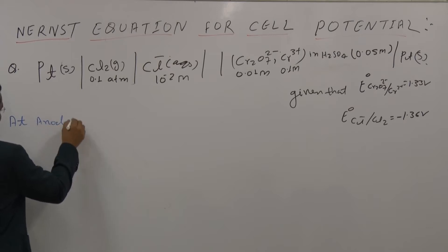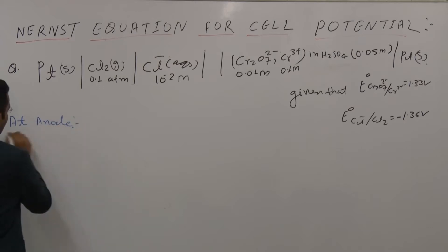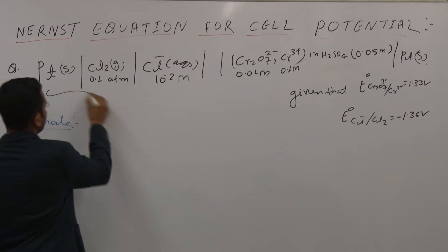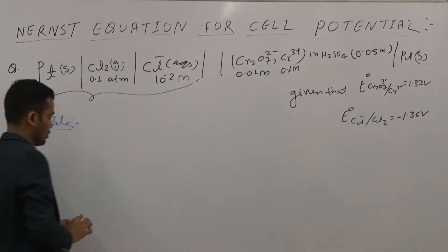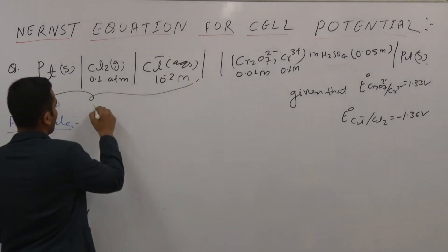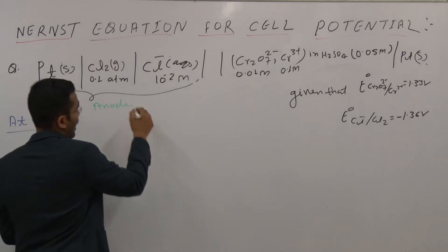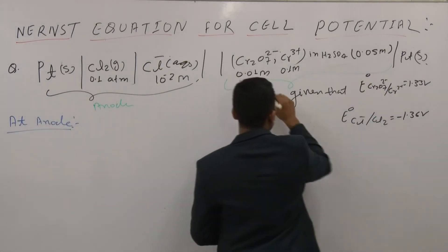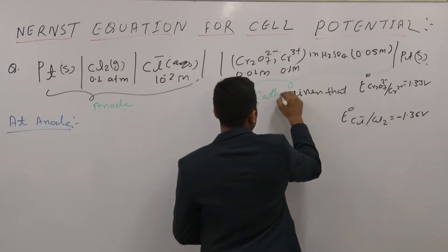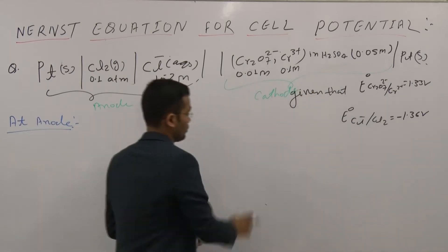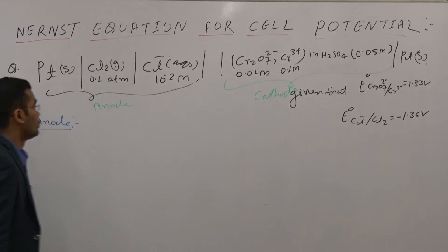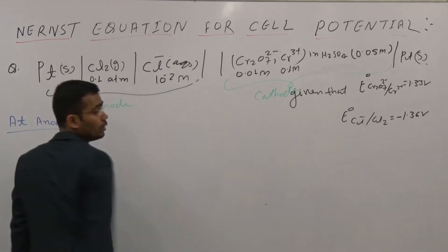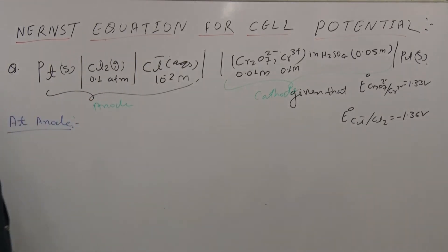This part is called the anode and this part is called the cathode. So this is the anode and this is the cathode.